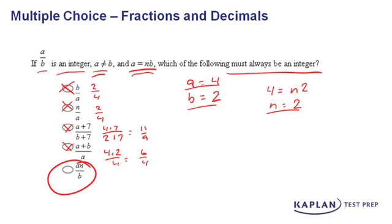We can check it if we'd like to and say, well, a times n, four times two divided by two is equal to four, that is an integer.